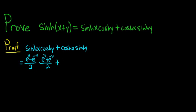Plus. Then cosh has the plus. Except this time it's e^x plus e^(-x) all over 2 times. And then sinh has the minus. Except this time it's sinh of y. So it's e^y minus e^(-y) all over 2.